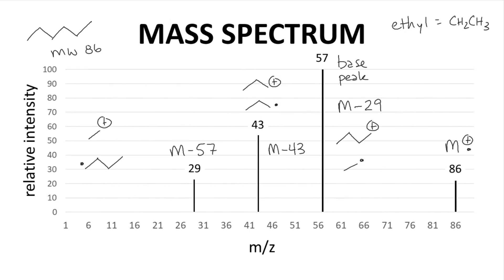The pattern of peaks that we see in this spectrum, with each peak being separated by a mass of 14, the same mass as a CH2 group, is often a sign of an alkane in a mass spectrum, and hexane is an alkane.